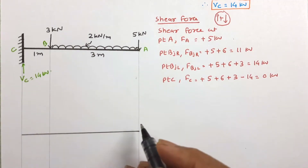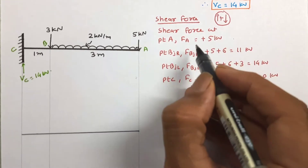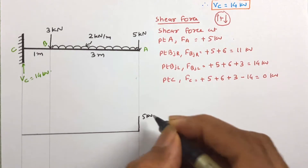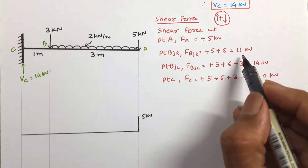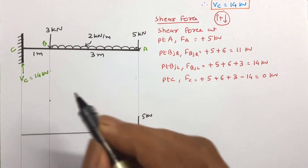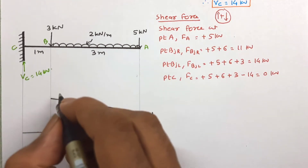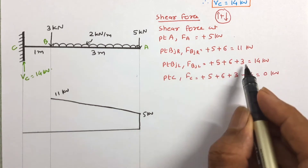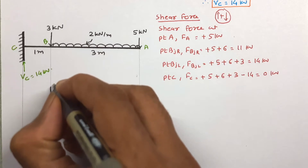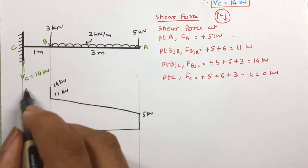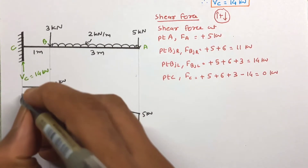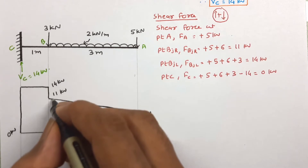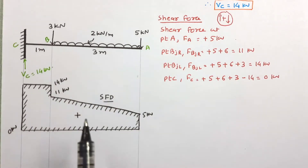Now let us draw the shear force diagram with all projections taken. At point A the shear force is 5 kN. At point B just left it is 11 kN, and at just right — adding the 3 kN point load — it becomes 14 kN. After that there is no load, so this is a straight line. At point C the shear force is 0. This is the shear force diagram.